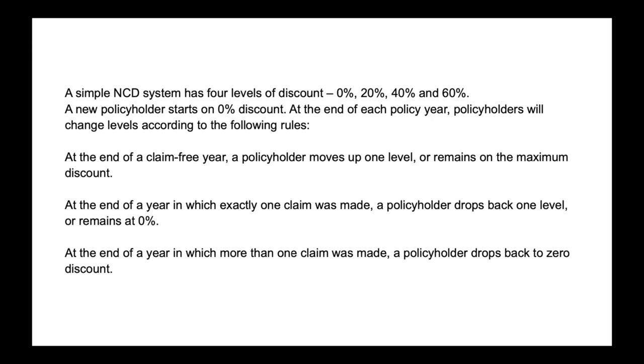A simple no-claim discount system has four levels of discount. A new policy holder starts at 0% and at the end of each policy year, they can change their levels according to the following rules. They're either going to move up a level or remain at the maximum discount level, or depending on how many claims they have, if there's been one claim, they're going to drop back one level or remain at the bottom, or if there's been more than one claim, so two or more, then they're going to just go all the way back to zero.